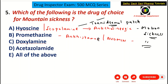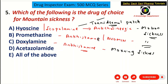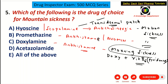Coming to C choice, doxylamine — doxylamine is also an anti-histamine. It prevents vomiting in the case of pregnancy, which is called morning sickness. The nausea or vomiting in pregnant ladies is called morning sickness. In that case, doxylamine is given along with vitamin B6 — that is pyridoxine — to prevent vomiting in pregnant ladies.